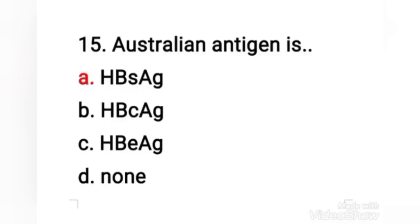Next question: Australian antigen is — HBsAg, HBcAg, HBeAg, or none? The right answer is option A — Australian antigen is HBsAg. HBsAg is the surface antigen of the hepatitis B virus, and its presence in blood indicates current hepatitis B infection. If you like this video, please subscribe and share. Thank you.